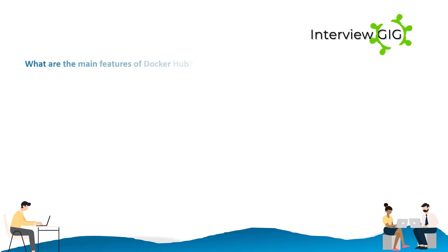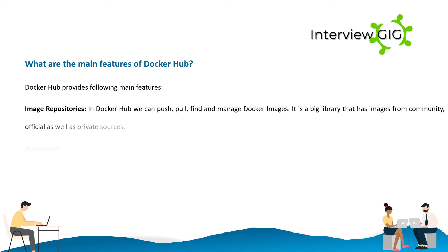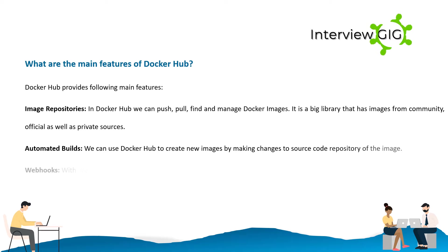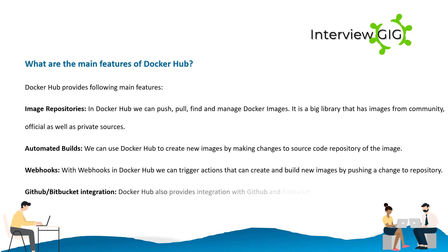What are the main features of Docker Hub? Docker Hub provides the following main features. Image repositories — in Docker Hub we can push, pull, find, and manage Docker images. It is a big library that has images from community, official, as well as private sources. Automated builds — we can use Docker Hub to create new images by making changes to the source code repository of the image. Webhooks — with Webhooks in Docker Hub we can trigger actions that create and build new images by pushing a change to a repository. GitHub and Bitbucket integration — Docker Hub also provides integration with GitHub and Bitbucket systems.